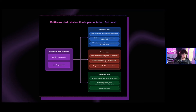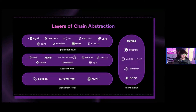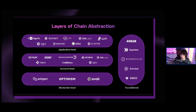As a quick overview of how different projects fit into these layers: at the application level, you have things like Agoric, Socket, Zeta Chain, Octo, Orb Labs, and Cluster. At the account level, you have Particle Network, Arcana, Zion, One Balance, and Near. At the blockchain level, you have Avail Nexus, Optimism Superchain, and Polygon AgLayer. Behind all this you also have foundational solutions like Everclear as a clearing layer, Pyth for oracles, Wormhole, Hyperlane, and Axelar as AMBs.